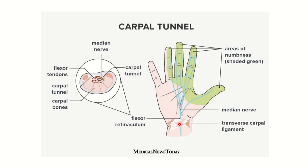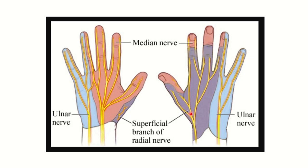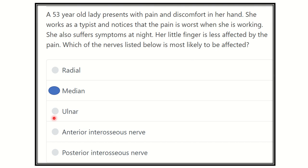Carpal tunnel syndrome develops when there is compression on the median nerve. It usually occurs when a person uses their hand very frequently, and the symptoms are also usually worse at night. The median nerve supplies the lateral three and a half fingers, while another nerve supplies the medial one and a half fingers. On the posterior part of the hand, the lateral three and a half fingers are supplied by the radial nerve and the medial one and a half by the ulnar nerve.